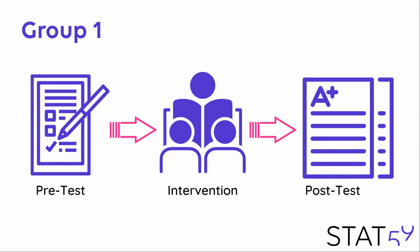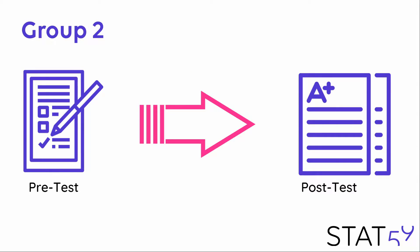Group 1 gets the pre-test. They get your teaching intervention — whatever that may be, a teaching course, a simulation, or a teaching curriculum — and then they get a post-test. Group 2 gets a pre-test, does not get the teaching intervention, and gets a post-test. This is a type of control group.